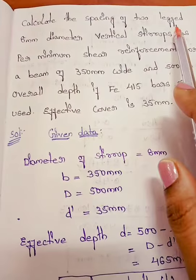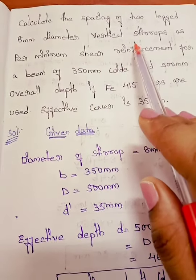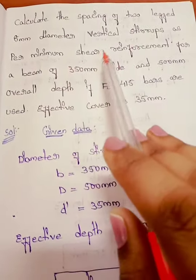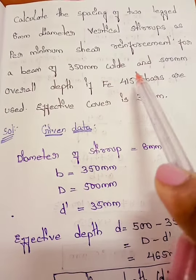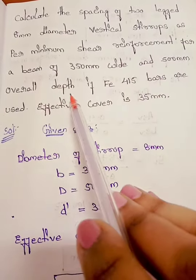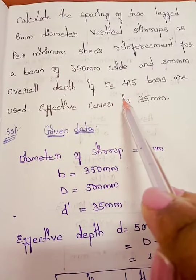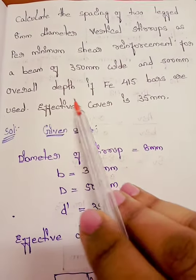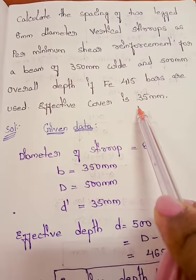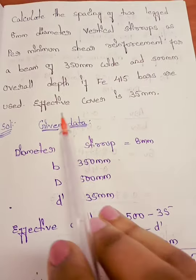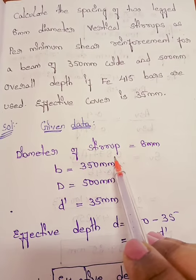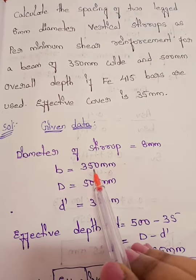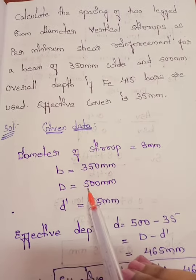Watch the video till the end. The question: calculate the spacing of two-legged 8 mm diameter vertical stirrups as per minimum shear reinforcement for a beam of 350 mm wide and 500 mm overall depth, if Fe415 bars are used and effective cover is 35 mm.